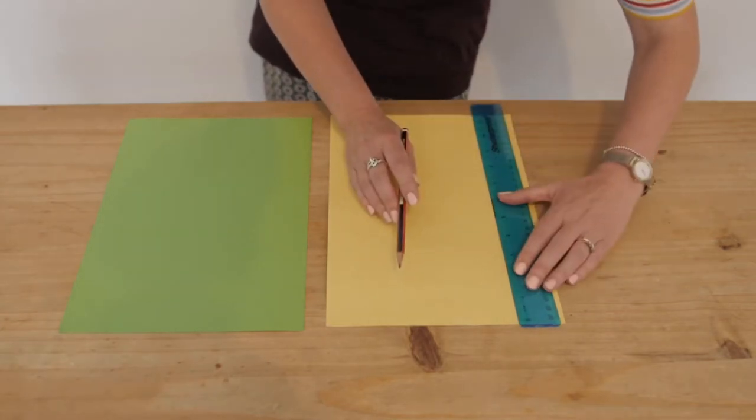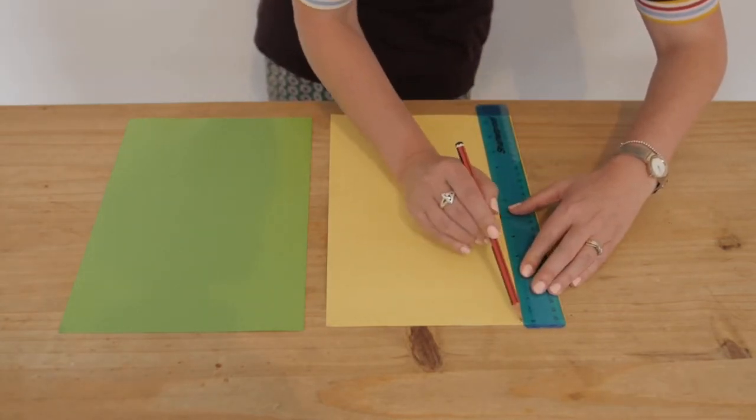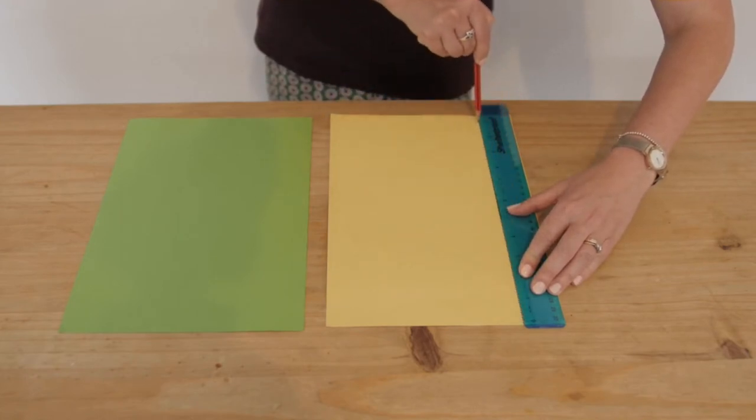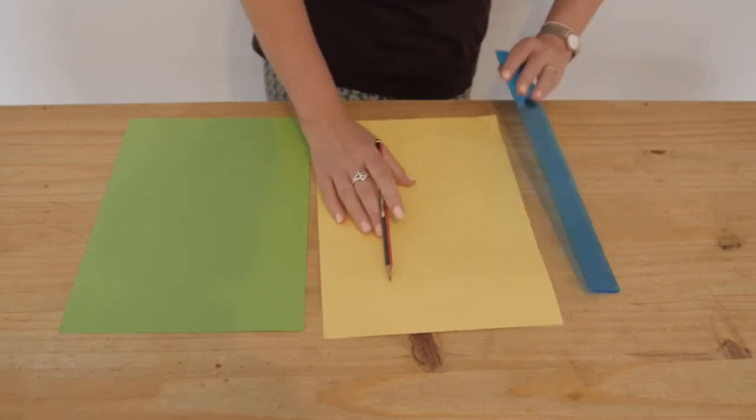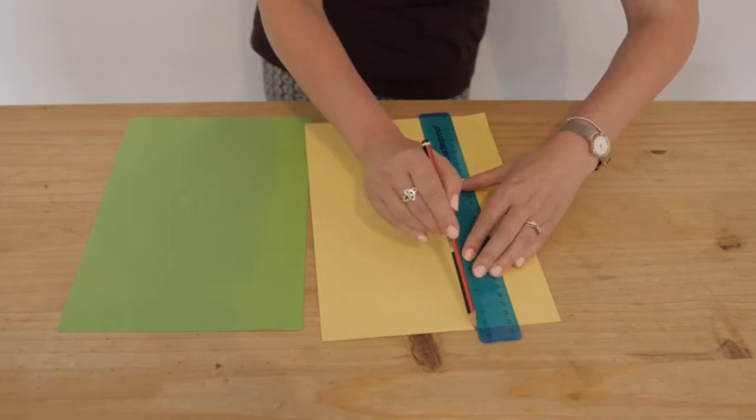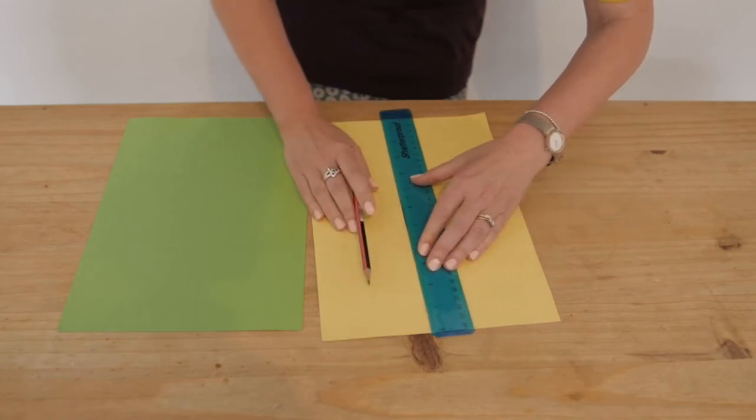Begin by putting your ruler at the edge of your card and you are going to draw a line from the top all the way down to the bottom of your card. You are going to do this again but this time you are going to use your pencil line as the beginning and we are going to draw another line all the way from one side to the other and we are going to repeat that.